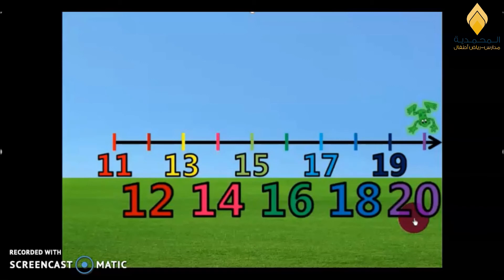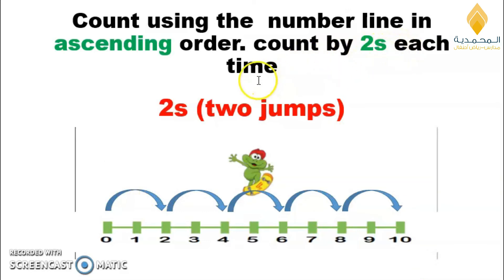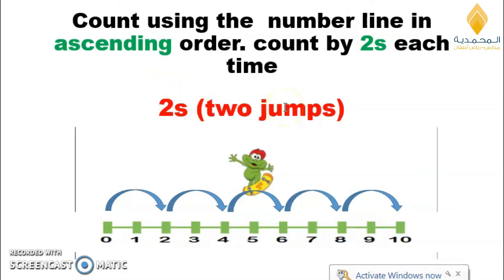This is a question in your book: count using the number line in ascending order. Again, ascending order means — tell me — good job, from left to right. Count by twos each time. Repeat after me: twos, two jumps. Excellent! If we start from zero and count by twos, look — count with me students: zero...